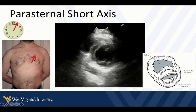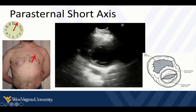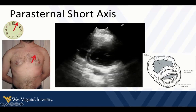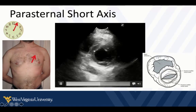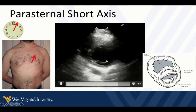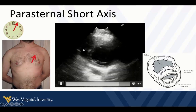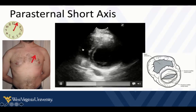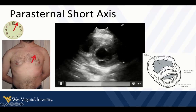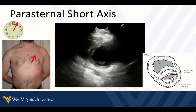Once we've identified the parasternal long axis view with the indicator around 9:30 to 10 o'clock, we rotate 90 degrees clockwise so the indicator is at about one o'clock, and then we get a cross section of the left ventricle. Here we're at about the mitral valve level. In a properly obtained image, the structures of the right heart should be in the upper corner. We can see a portion of the descending thoracic aorta, the mitral valve, and we want to orient this so the ventricle itself is as round as possible.